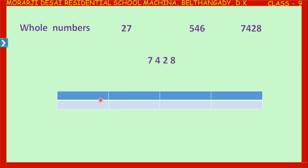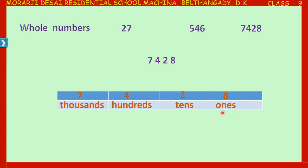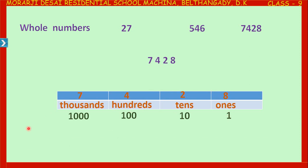In 7428 we have seven thousands, four hundreds, two tens, and eight ones. To write the place value of a whole number, we start from the right end and move towards the left: ones, tens, hundreds, thousands, ten thousands, lakhs, ten lakhs, and it goes on. So 7428 can be written in expanded form as seven × 1000 + four × 100 + two × 10 + eight × 1.